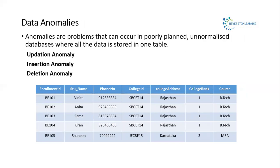Another big problem is data anomalies. Anomalies are problems that can occur in poorly planned or unnormalized databases where all the data is stored in one table — as we have done here, keeping student information, college information, and course details all in the same table. This is not a good design. There are three types of anomalies: updation anomaly, insertion anomaly, and deletion anomaly.